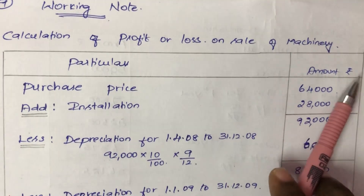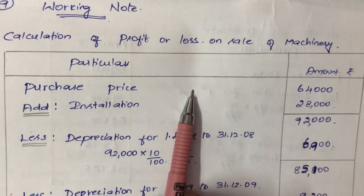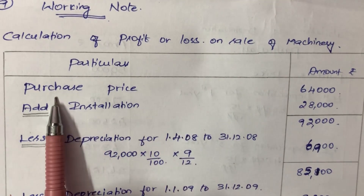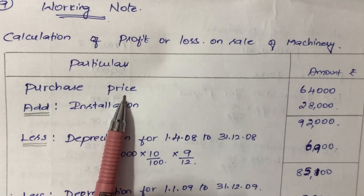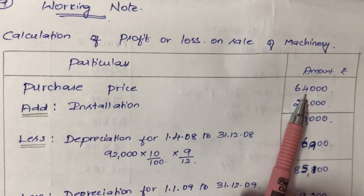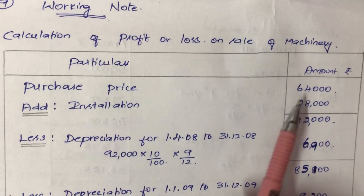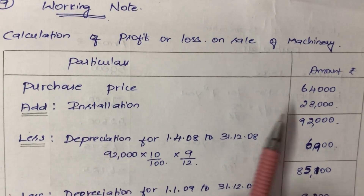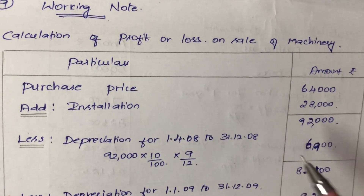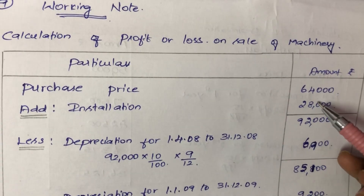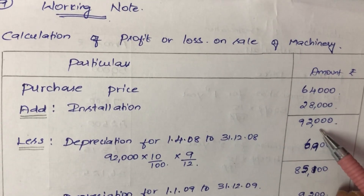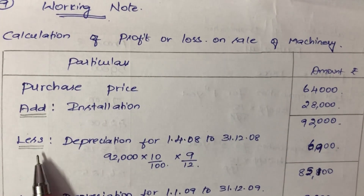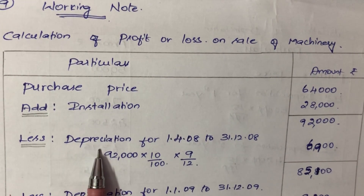Particulars and amount in rupees. Using the statement formula: first, purchase price is Rs. 64,000. Add installation cost Rs. 28,000. Adding both gives Rs. 92,000. This is the original cost of the machinery.